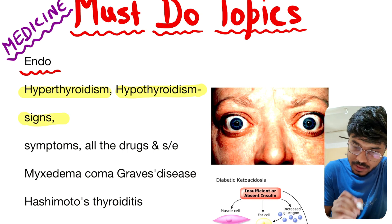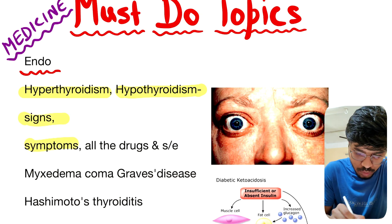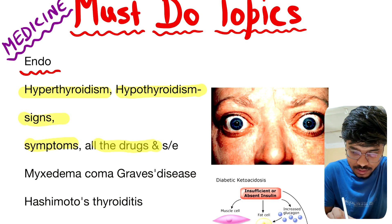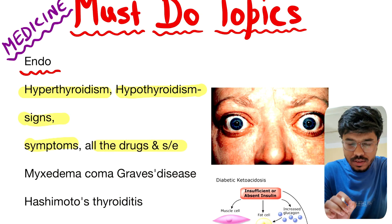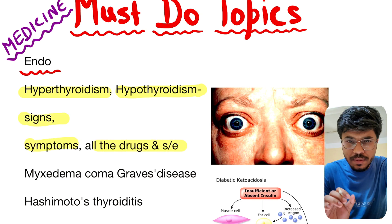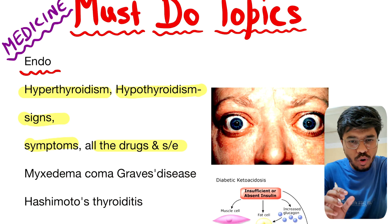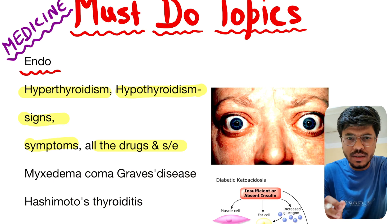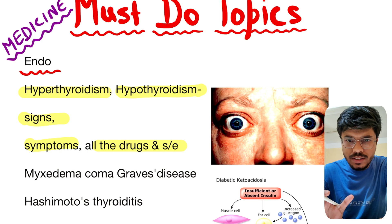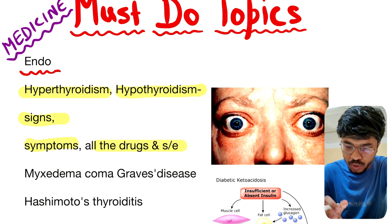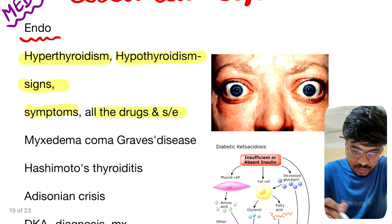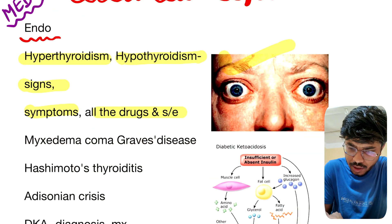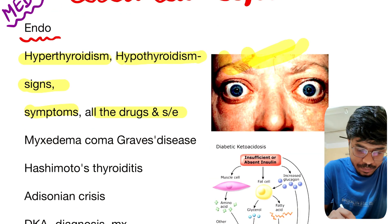Hypothyroidism — the eye signs, symptoms, all the drugs and side effects — this topic is very very important. Graves disease: all the eye signs — Stellwag sign, Von Graefe sign, Joffroy's sign — all the eye signs are very very important. This is thyroid ophthalmopathy.